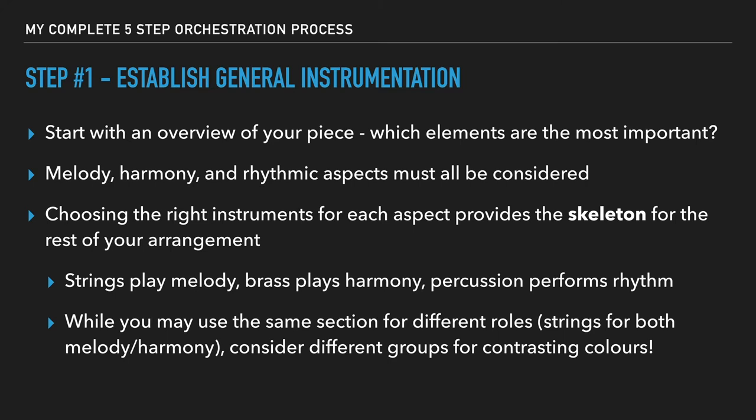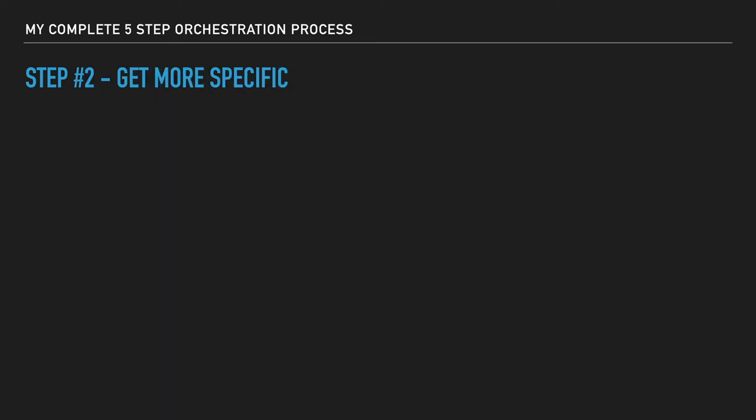You could use the same section for different roles, like strings for both melody and harmony. But you definitely want to consider using different groups for contrasting colors, because the string section has quite a homogenous color throughout its entire family. Strings — violins, violas, celli, and basses — all have different ranges and different articulations, but in terms of instrument build and the sound they produce, it's quite similar. So it's great practice to think about: if the strings are doing one thing, can I use a different ensemble to accomplish the rest of the accompaniment? Asking yourself those questions can be very useful. This step in general is just to look at what overall instrumentation we can use for our three main aspects of melody, harmony, and rhythm. Once you've nailed that down, we can move on to step two, which is to become more specific.